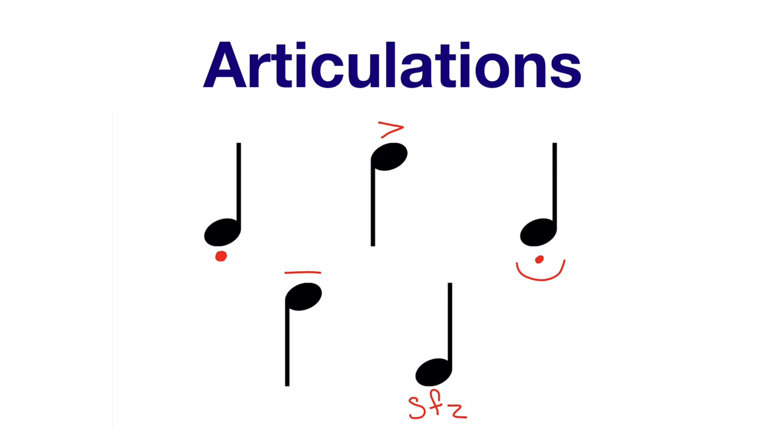Hey everybody, today we're going to be talking about articulations. Articulations are just symbols in music that tell us exactly how we should perform particular notes. And just like a lot of other terms in music, these are usually Italian words associated with symbols that help us know what to do on any particular note.